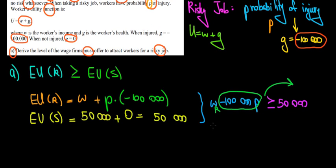We would get that the wage of the risky job must be greater than or equal to 50,000 euros plus 100,000 multiplied with P.